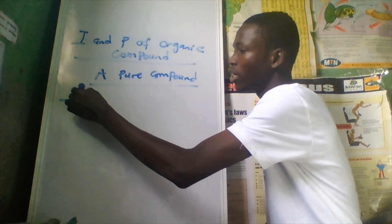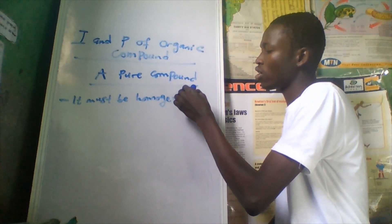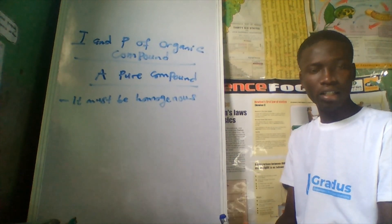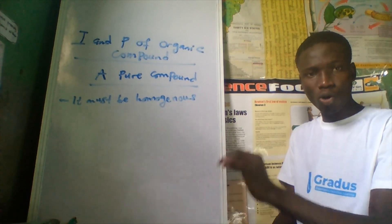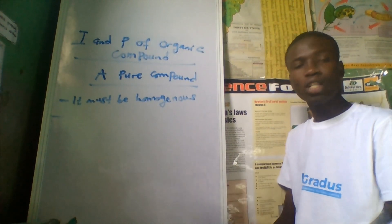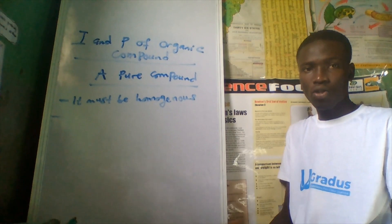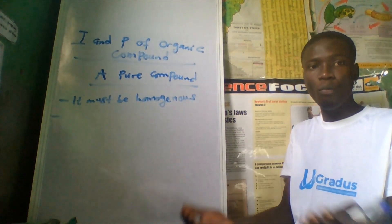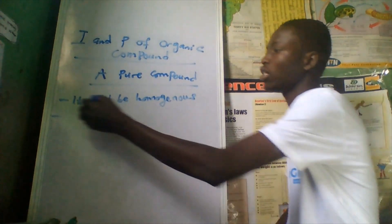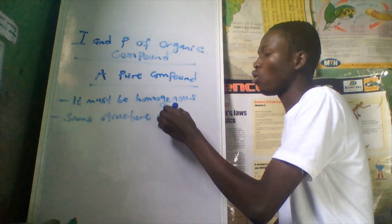Number one, it must be homogeneous — meaning it must contain only that compound itself, nothing else. Another characteristic of a pure compound is that it consists of molecules of the same structure. Two or more elements combine to make up a compound, and the molecules within that compound must all have the same structure.